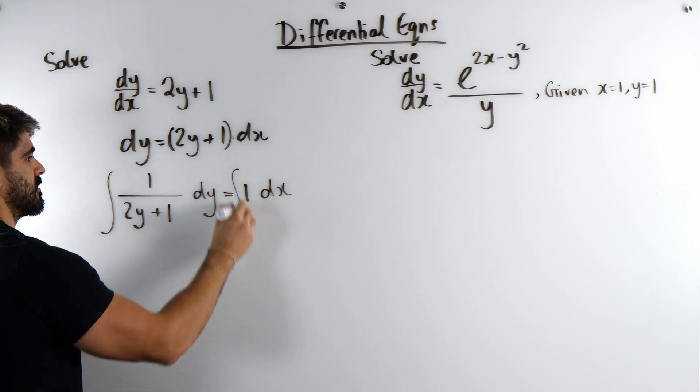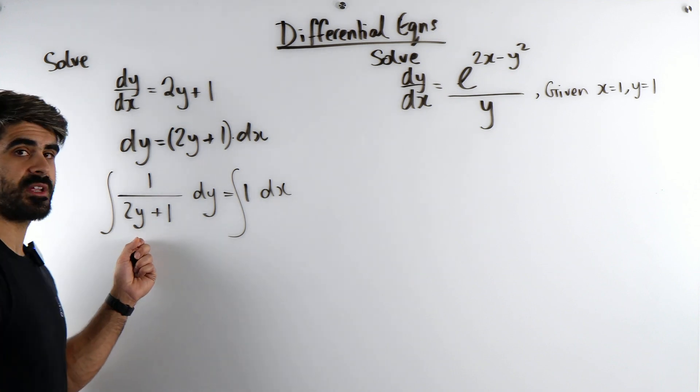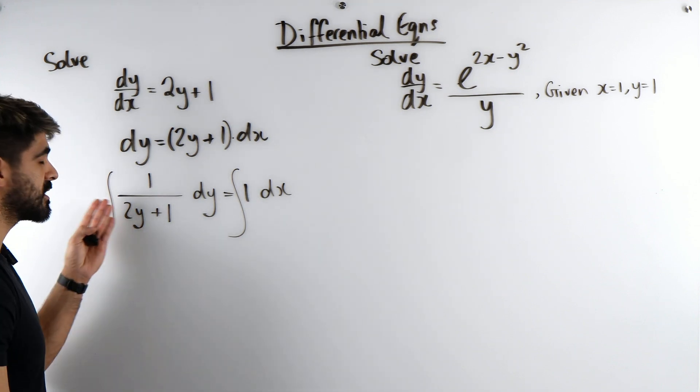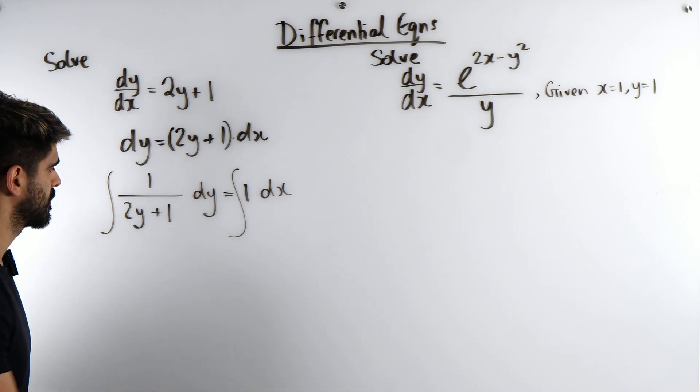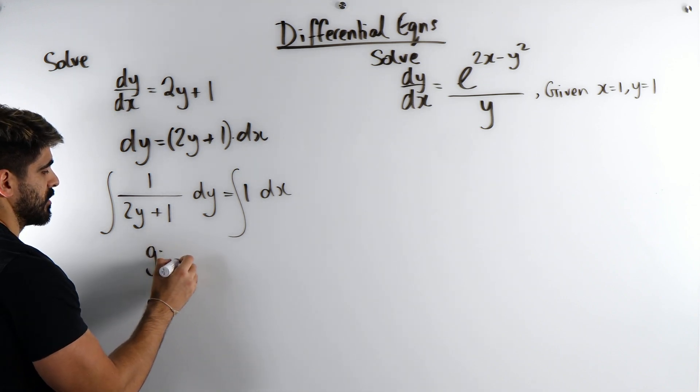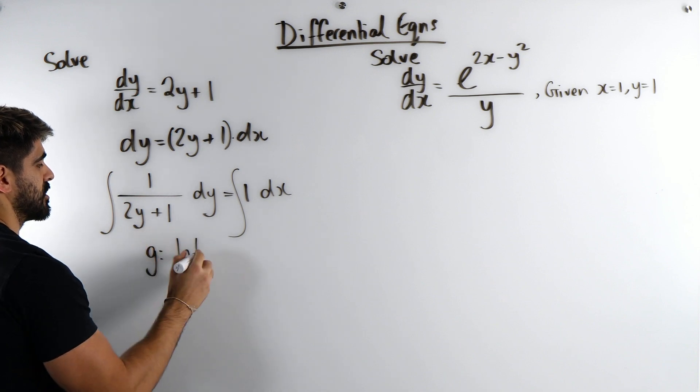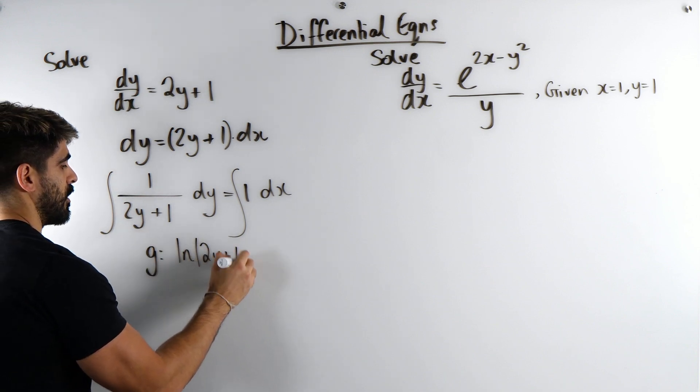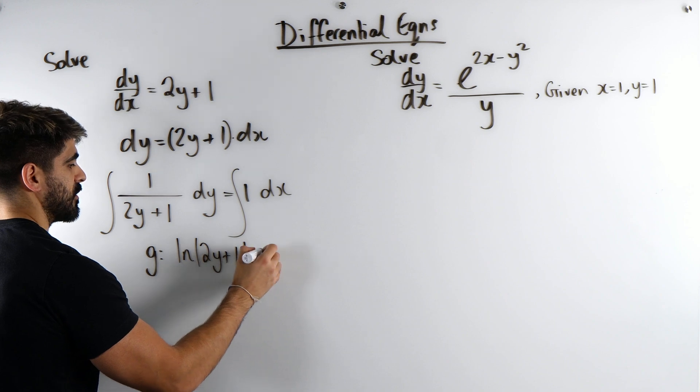Then we're going to integrate both sides. How do we integrate this? Well, you need to think, what differentiates to fractions? That's going to be ln. So we make a guess. We say, my guess is that this integrates to ln of 2y plus 1. Then we differentiate it to check.